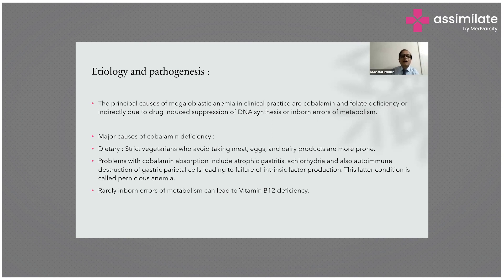The major cause of cobalamin deficiency is dietary deficiency. It is more common in strict vegetarians who avoid taking meat, eggs, and dairy products. They are more prone to develop megaloblastic anemia due to cobalamin deficiency.